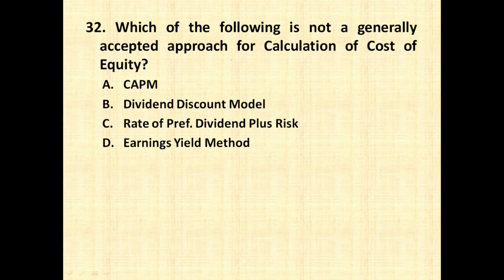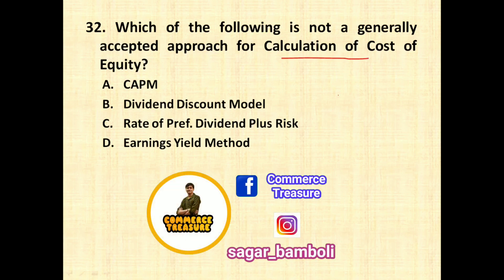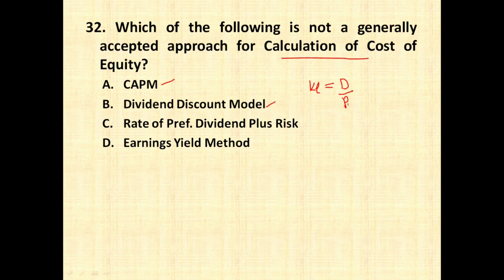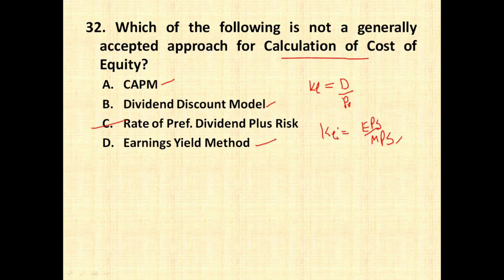The next question: which of the following is not a generally accepted approach for calculation of cost of equity? The CAPM model is a method — KE = RF + (RM − RF) × Beta. The dividend discount model is also a method — KE = Dividend ÷ P0. The earnings yield method is also a method — KE = EPS ÷ MPS. However, 'rate of preference dividend plus risk' is not a method. The correct additional method is the growth model: KE = D1 ÷ P0 + growth rate.